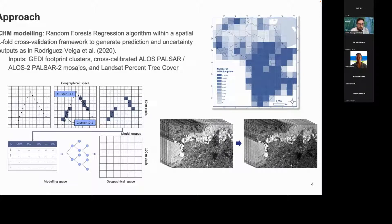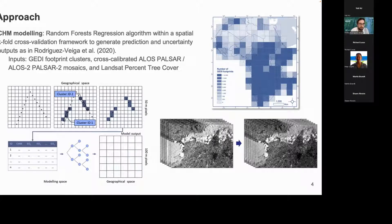Our reference data was the spaceborne GEDI LiDAR footprints. Instead of using single footprints, we grouped them — clustering them in groups of four — to form a four-footprint cluster that we used as our reference. We assume that having more footprints reduces sample variability as we relate this to four pixels of 50-metre resolution, producing output at 100-metre resolution. As predictor data, we used synthetic aperture radar — ALOS PALSAR and ALOS-2 PALSAR mosaics — applying temporal cross-calibration to correct for issues such as soil moisture. We also used Landsat percent tree cover as a predictor.